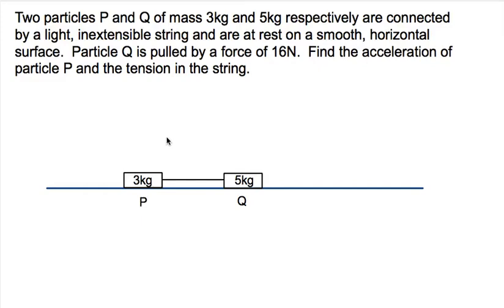Today we're going to look at two particles connected by a string and seeing how they operate together. So I have two particles here, P and Q. P has mass 3 kilograms and Q has mass 5 kilograms and they're connected by a light inextensible string.